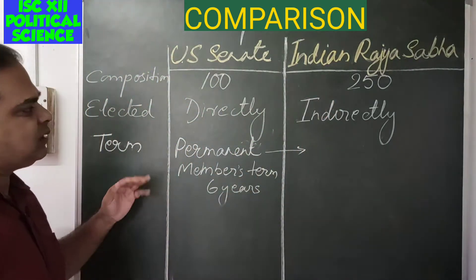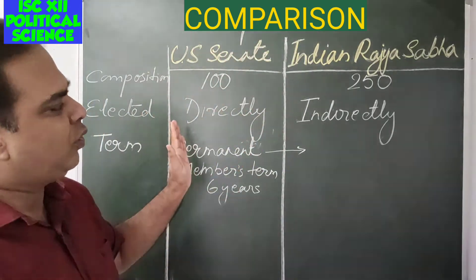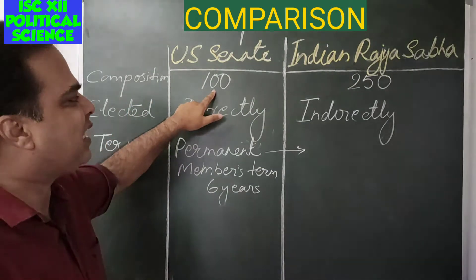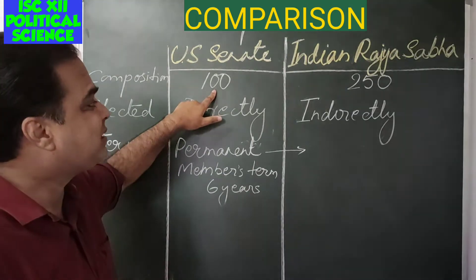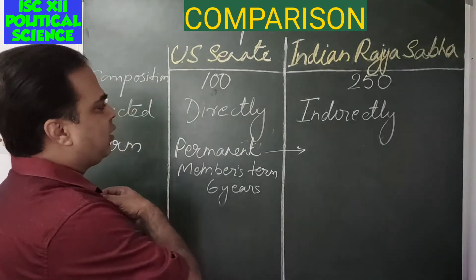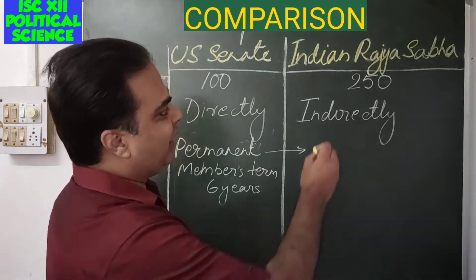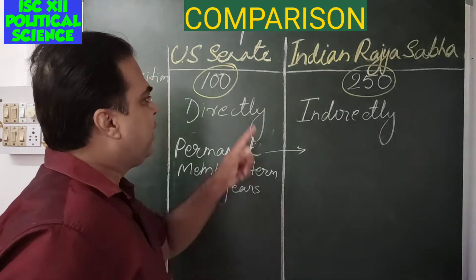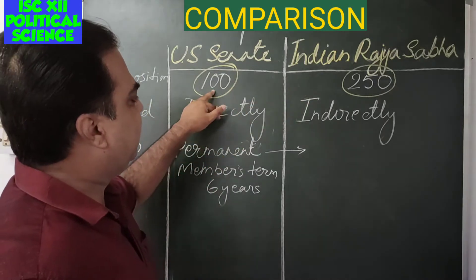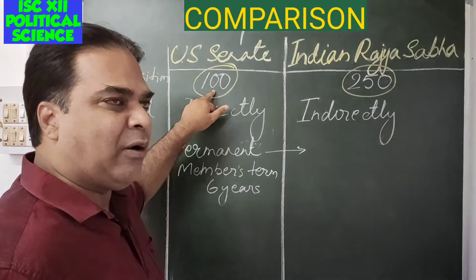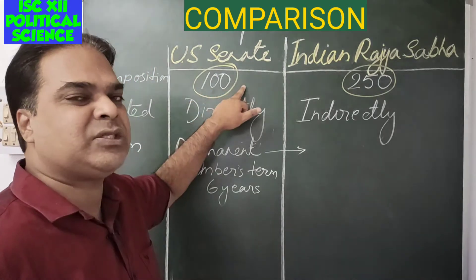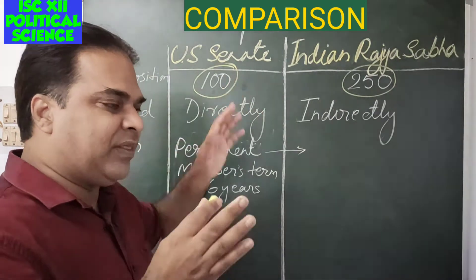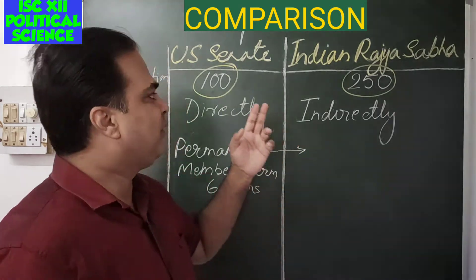Starting with composition: the US Senate has 100 members. The US has 50 states, so with 100 members, each state sends two members to the Senate. The seats in the US Senate are based on equality — all states are treated equally, whether small or big, and two representatives are elected for the Senate from each state.